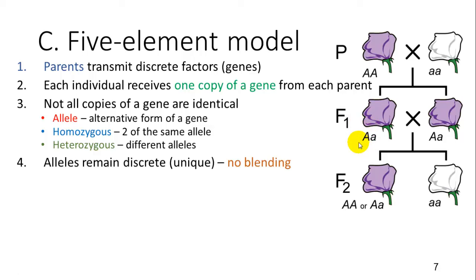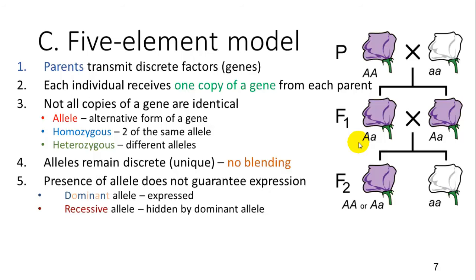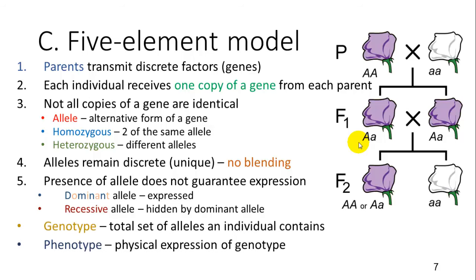Alleles remain discrete and there is no blending — that is the fourth element of the model. Fifth, the presence of an allele does not guarantee expression. So you have a dominant and a recessive. Not always, but in many cases which Mendel looked at, they were dominant and recessive. The genotype is the total set of alleles an individual contains — for example, big A big A. The phenotype is the physical expression — for example, the purple flower.